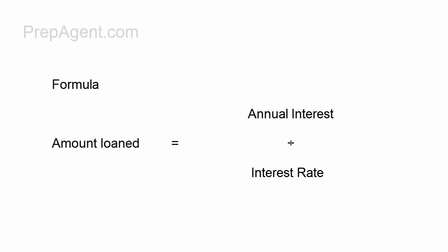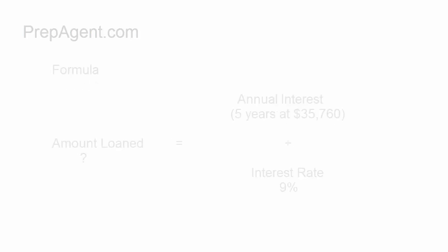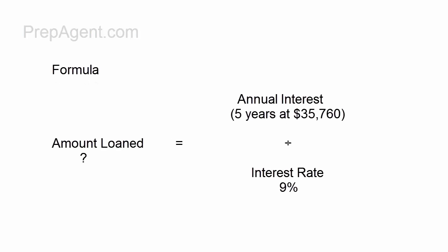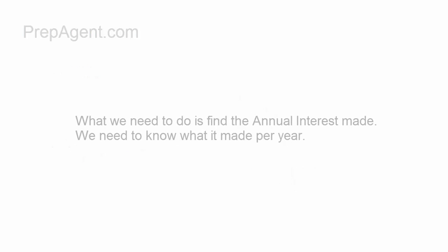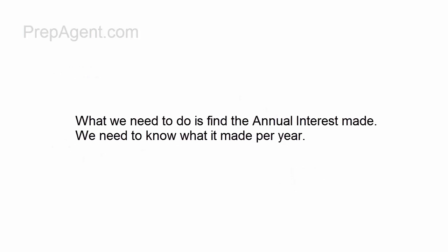Here's the formula. The annual interest divided by the interest rate will give you the amount loaned. We know what it is for five years. We need to find out what it is per year and divide that by the 9% interest rate to get the amount loaned.